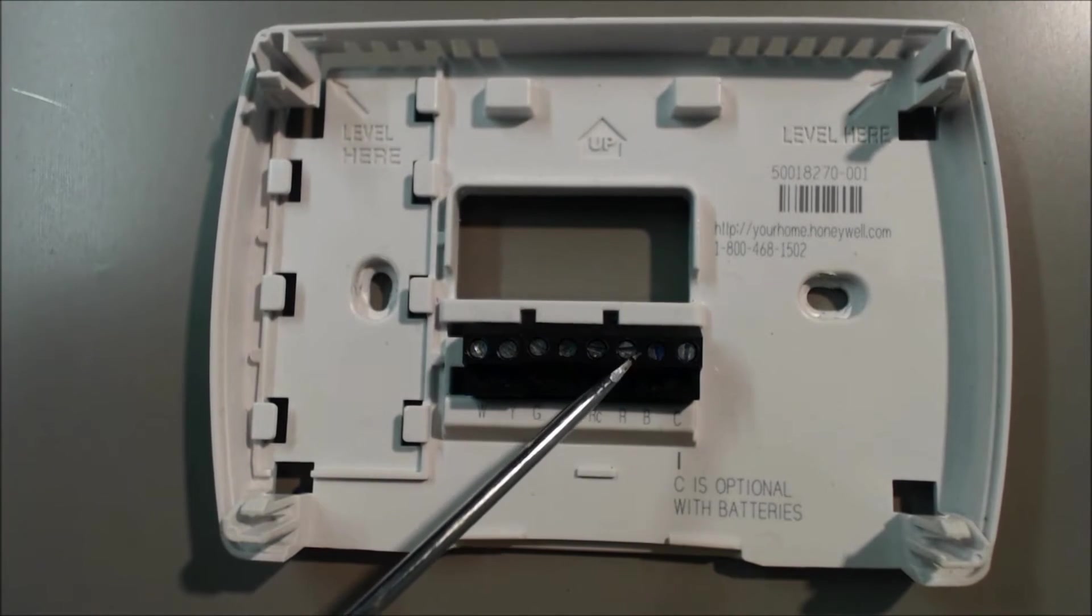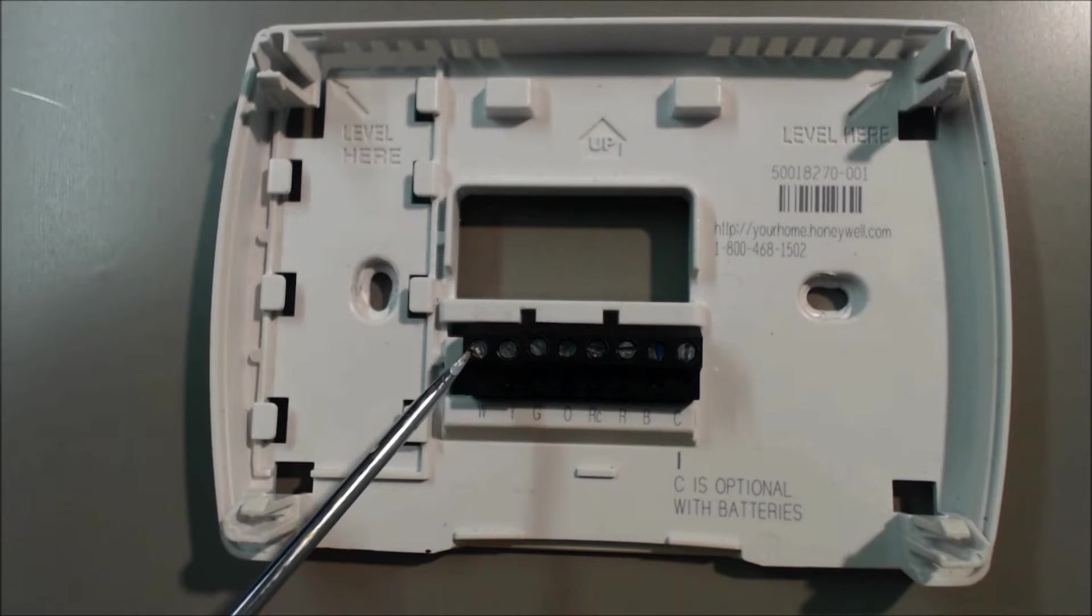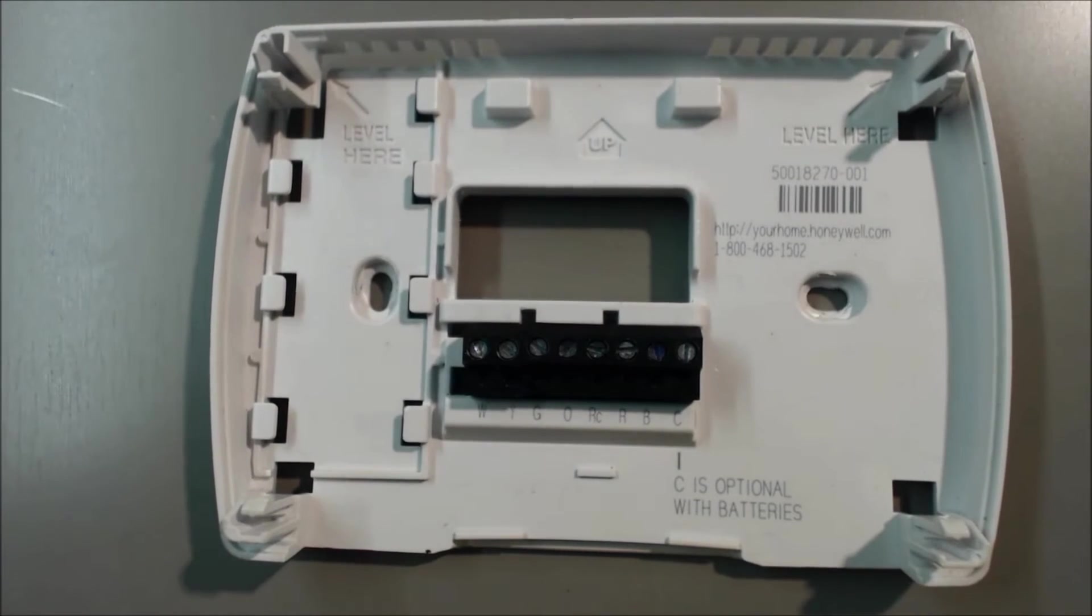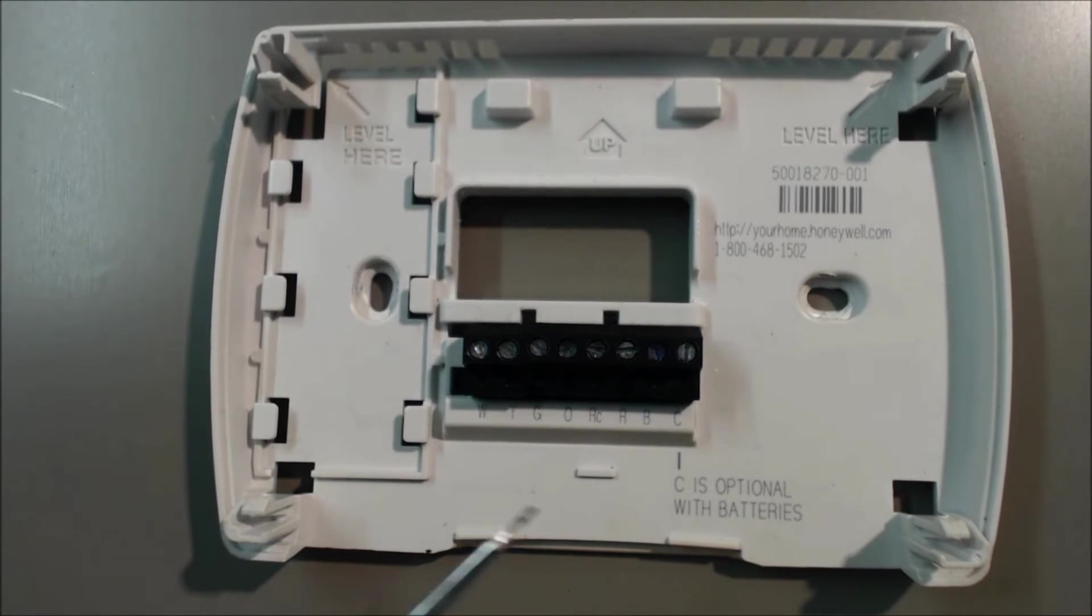24 volts comes in the R, it goes back out as a signal wire as W to the control board on the boiler. It'll tell the boiler to turn the heat on.